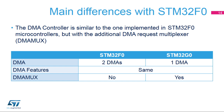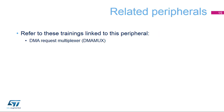The STM32G0 includes a DMA request multiplexer that maps transfer requests issued by peripherals to DMA channels. You can refer to training slides related to the DMA request multiplexer called DMAMUX for additional information.